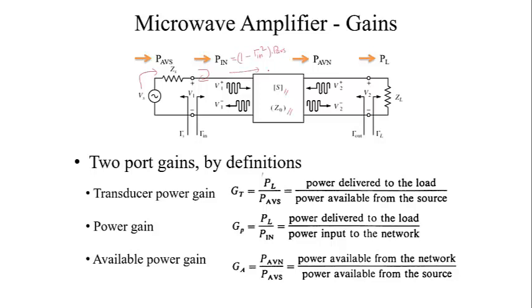That much power will go inside and will be amplified. After the amplifier, this is the amount of power available after amplification. This is nothing but S21 squared into the P input. This power will be delivered to the load. The load is also having a load reflection coefficient. So P_L is nothing but this power available from the network into 1 minus the reflection coefficient squared. From the source to the load, how much power is actually going is characterized by different gains.